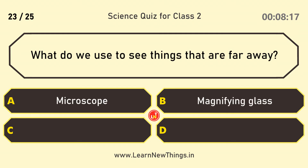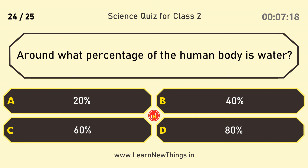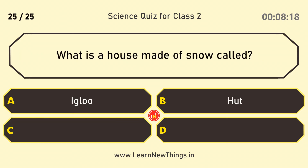What do we use to see things that are far away? Binoculars. Around what percentage of the human body is water? 60. What is a house made of snow called? Igloo.